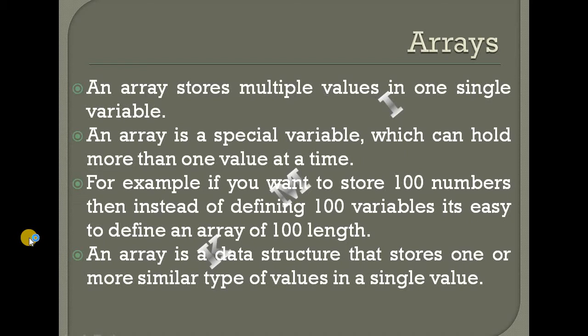An array is a special variable which can hold more than one value at a time. For example, if you want to store 100 numbers, instead of defining 100 variables, it is easy to define an array of 100 elements.